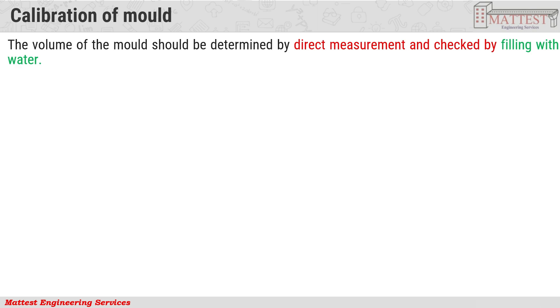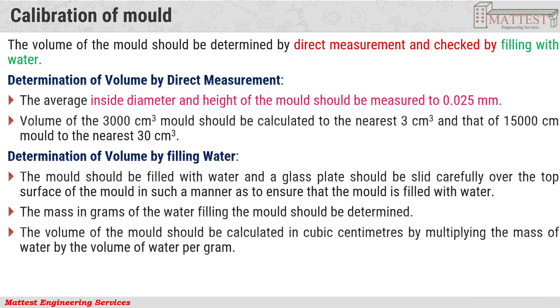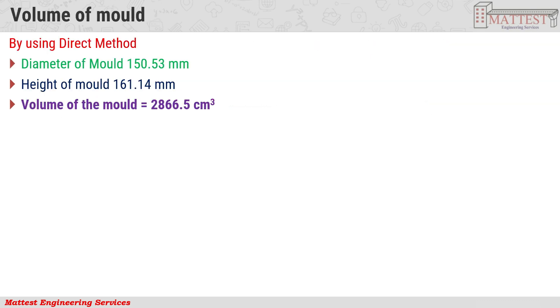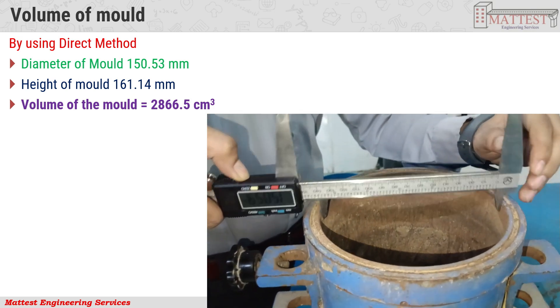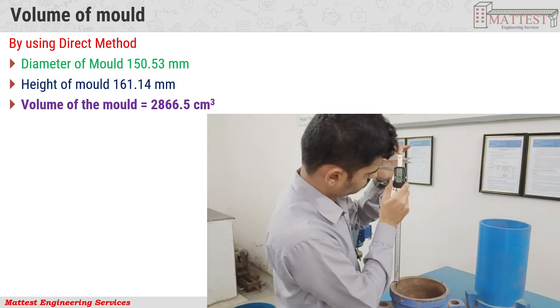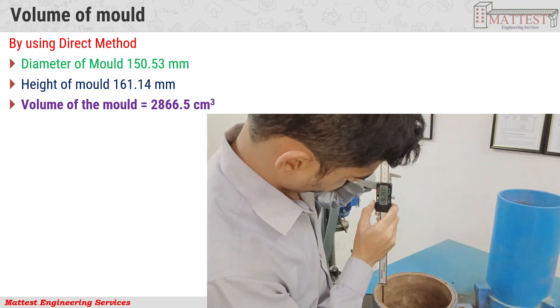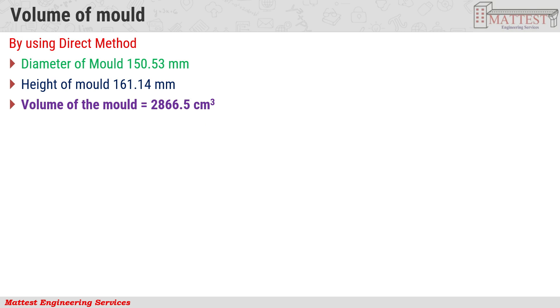Calibration of mold: The volume of the mold should be determined by direct measurement or by filling with water. Volume of the mold by direct measurement: Diameter of mold — 150.53 mm. Height of mold — 161.14 mm. Volume of the mold — 2866.5 cm³.